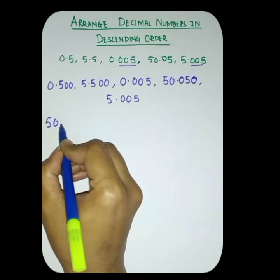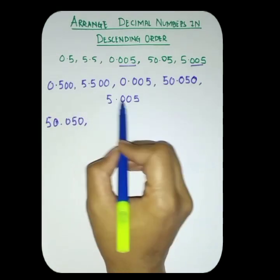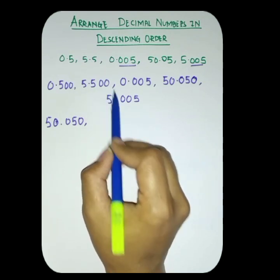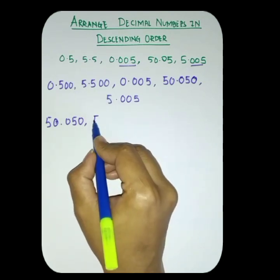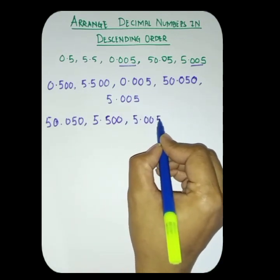So here 50.050 will come first. Then we have two fives, 5.500 or 5.005. 5.500, then next 5.005.